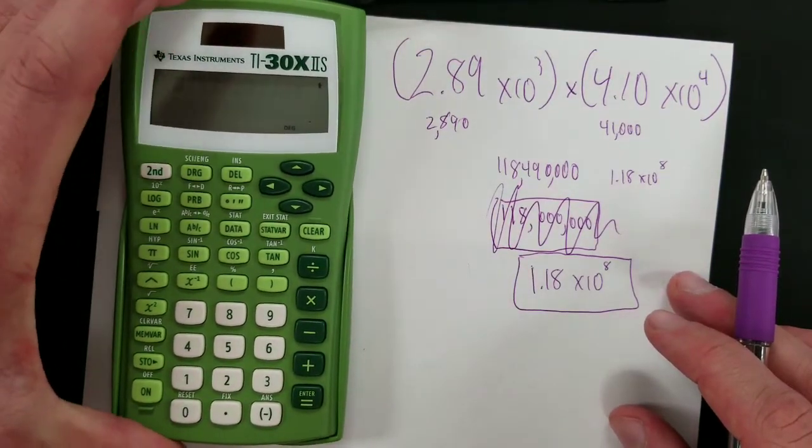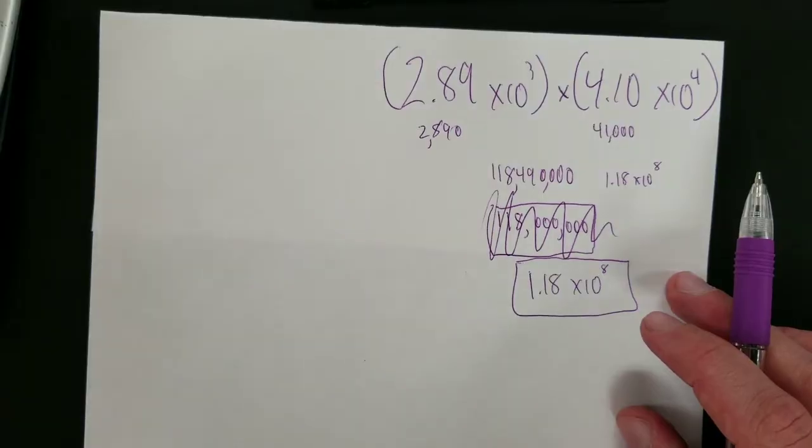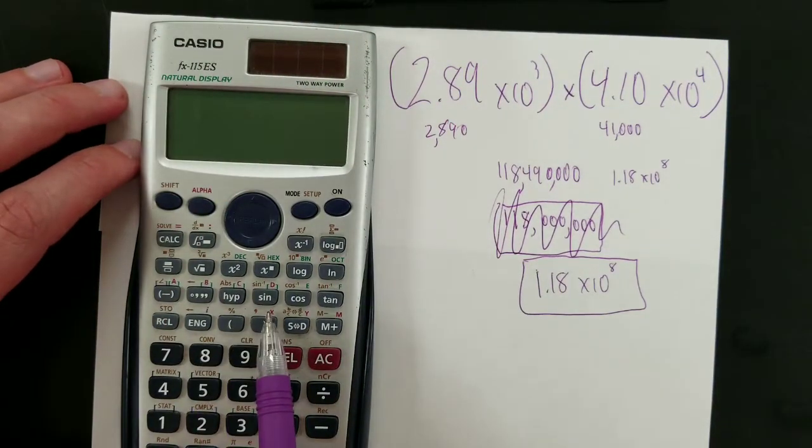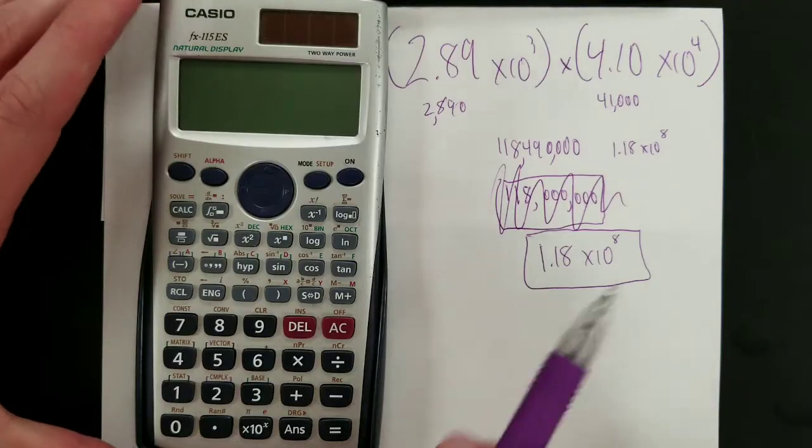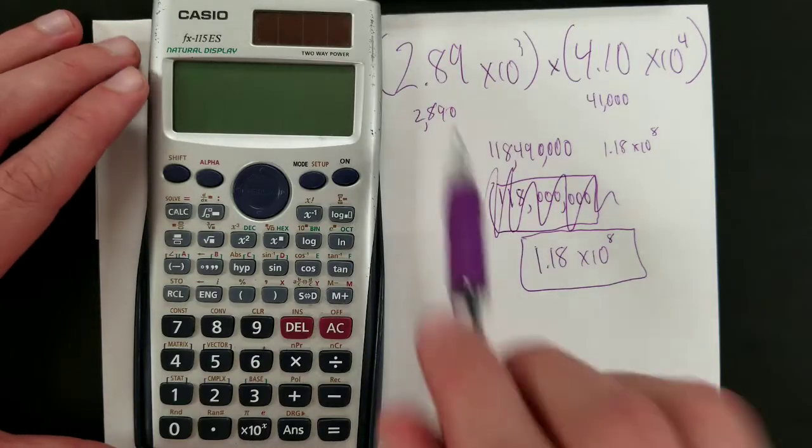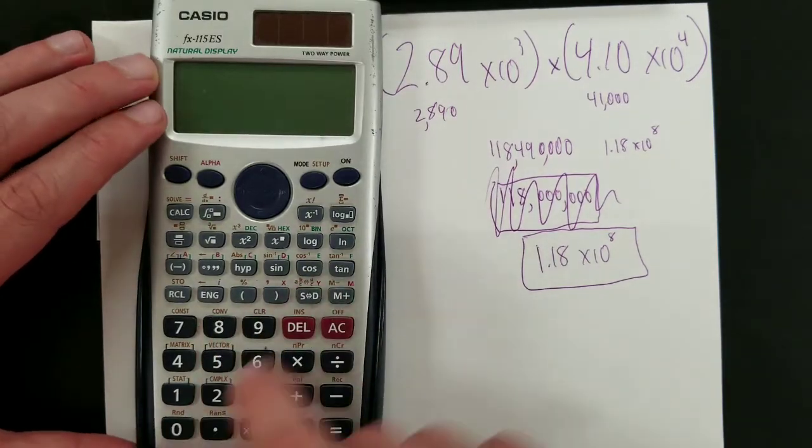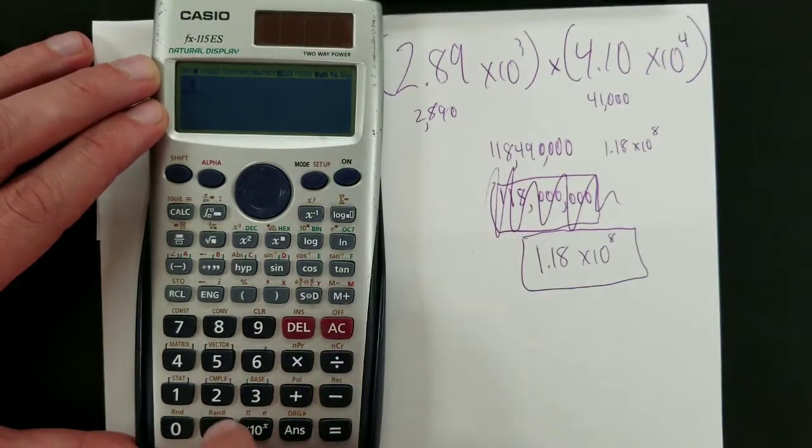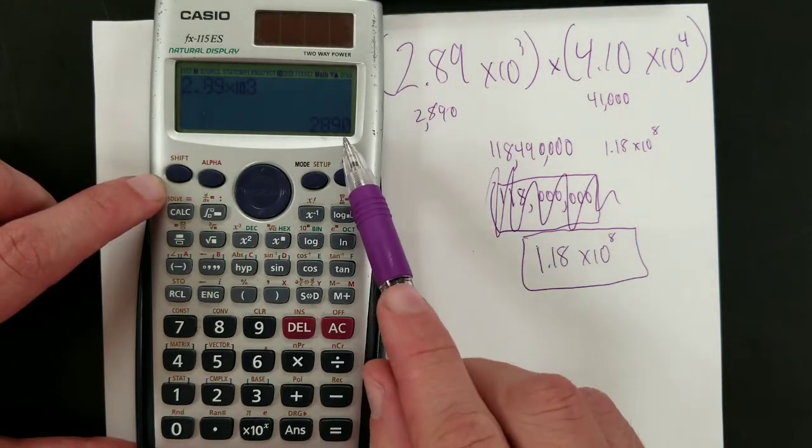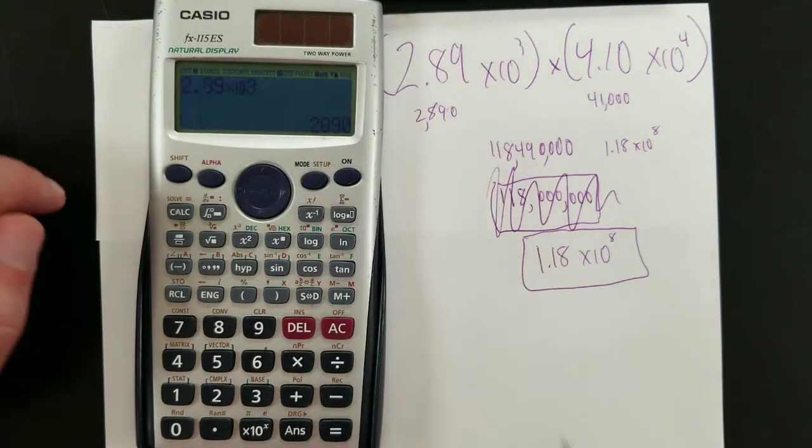Okay. Now just a little brief bit. What about doing this on the Casio? Similar. There's your parentheses buttons. The difference though is instead of EE, it looks like you've got this function here. So 2 point, oops, let's turn the thing on. 2.89 times 10 to the third power gives 2,890. So that should work just fine.